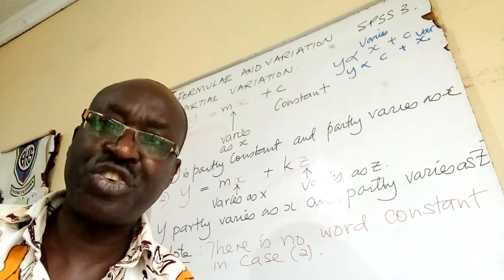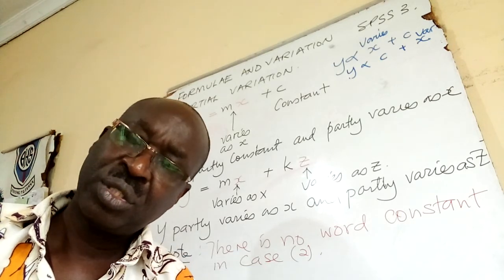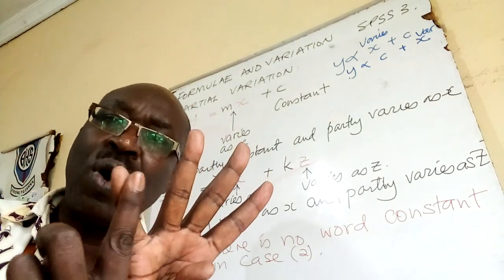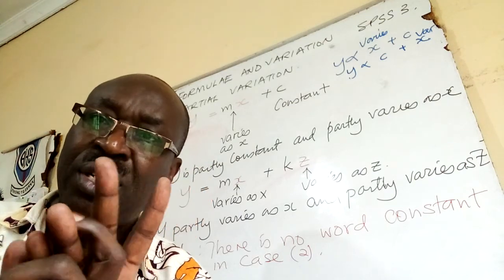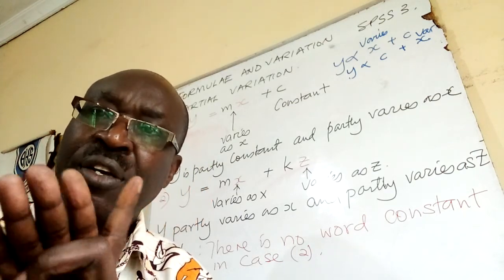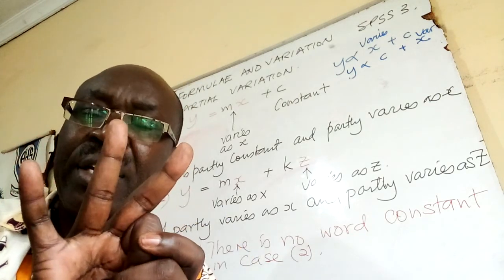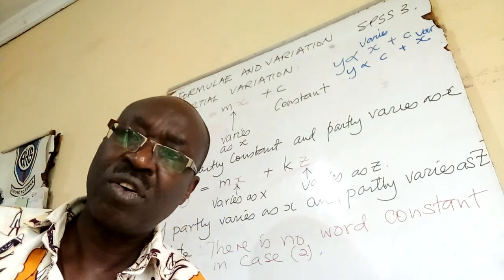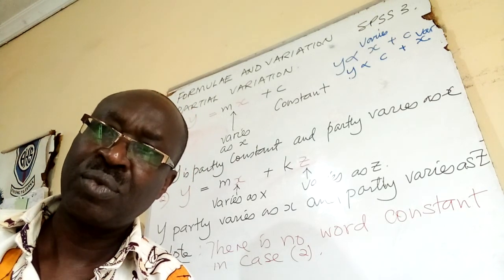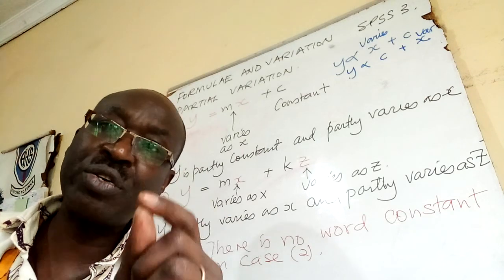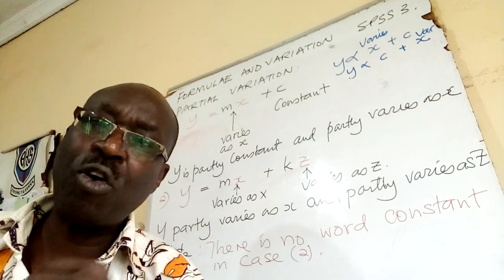Equation of straight line is in the form of y is equal to mx plus c. Then, in variation, the introduction, there are four: One, direct. Two, inverse. Three, joint. Four, partial. In the first three, there is no sign of addition. So, it is only in partial where you get addition. And, you will get that addition in two formats.